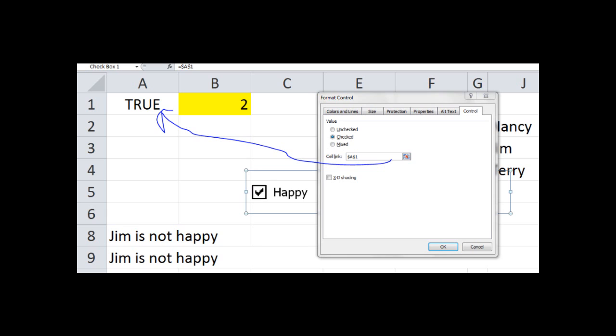In the cell link, click on the icon at the right end of the cell link field. Once it opens up, click on cell A1. Then click on that icon to the right again so that it populates the cell link field with A1. Once you do that, make certain that the value radio buttons, checked is checked. Once that's done, press the OK button.